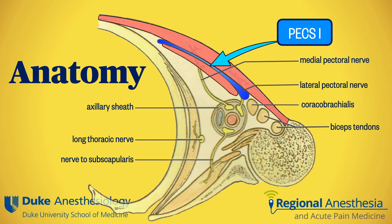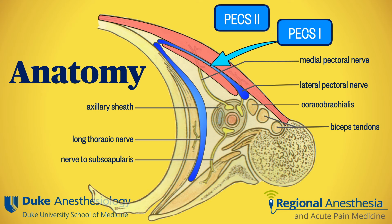If we place local anesthetic one plane deeper — between pec minor and serratus anterior muscles — this results in an expanse of local anesthetic spreading along the side of the chest wall, anesthetizing the lateral cutaneous branches of roughly T2 to T6. This is commonly known as pecs 2. While the original description of pecs 2 incorporated the pecs 1 block, most anesthesiologists describe them separately.